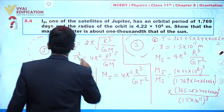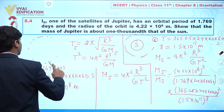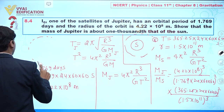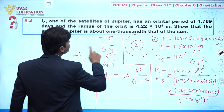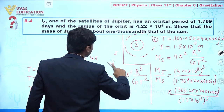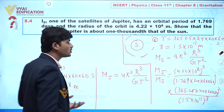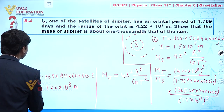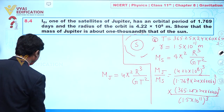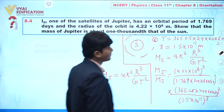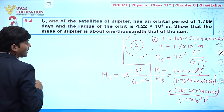This is a lengthy calculation but we can take some approximation and find the conclusion. The mass of Jupiter is almost 1/1000 times the mass of the Sun.